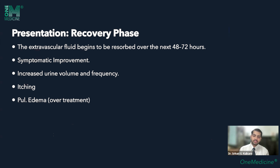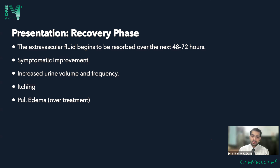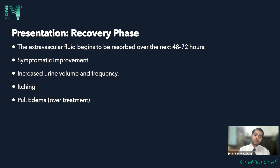The recovery phase follows the critical phase and usually lasts 48 to 72 hours. At this point the patient is typically in a hospital setting and may have received significant fluids. These extra-vasated fluids return to the intravascular compartment, leading to increased urine volume and frequency. The patient will show dramatic symptomatic improvement, stopping dizziness, myalgia, and arthralgia. Patients may have a vague itching, the cause of which is still under study. Pulmonary edema can occur if the patient is overtreated with fluids at this stage.